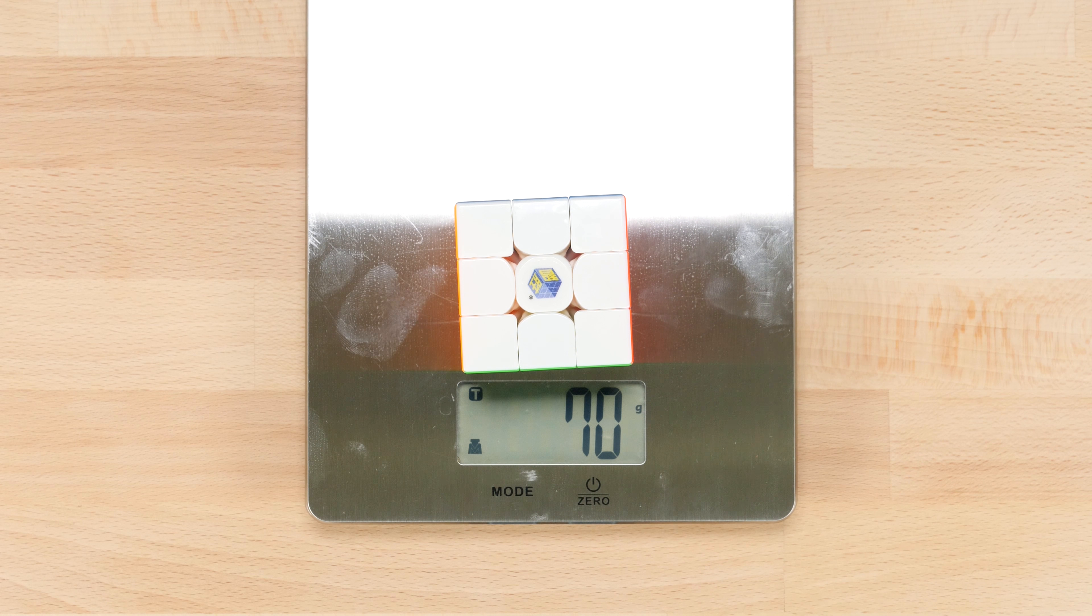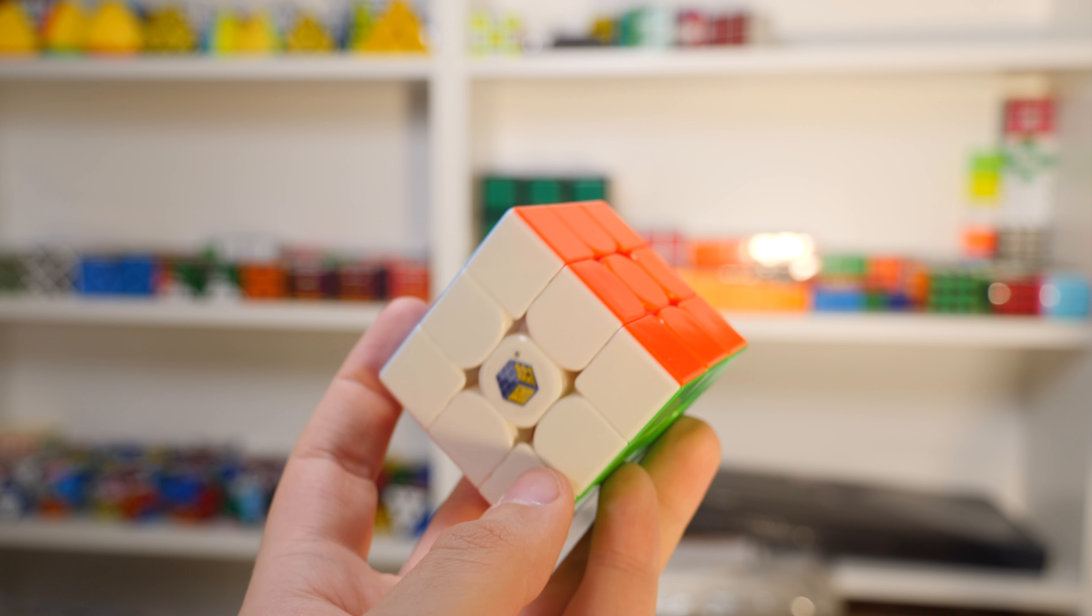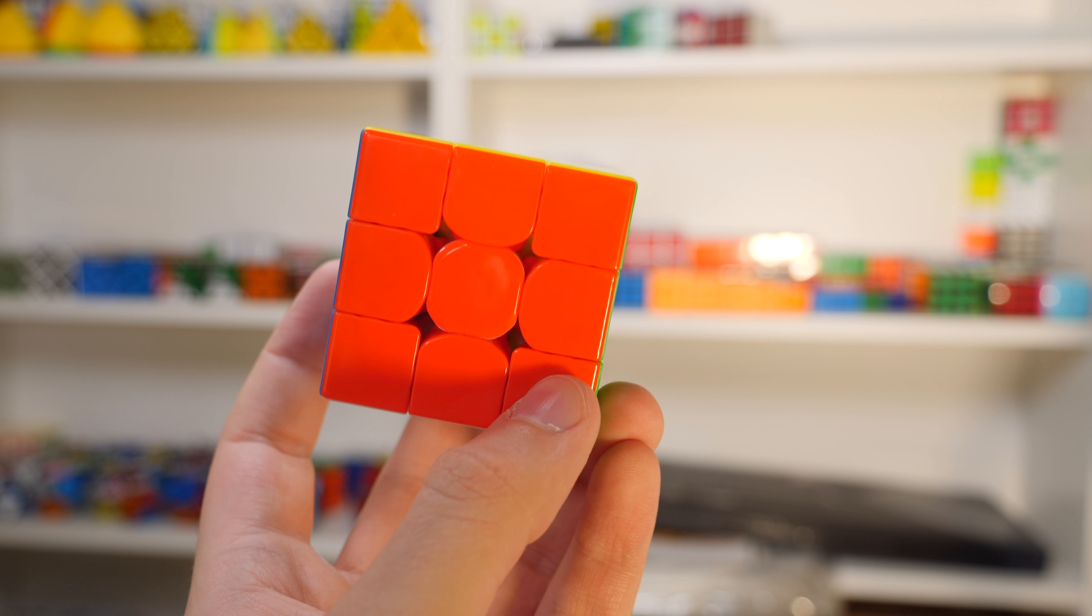So the base Huanglong weighs 70 grams with the magnetic one being 76 grams. That makes these cubes some of the lightest on the market, even more than the Gann Air line which is pretty impressive. But some people, myself included, might not be a very big fan of this. I tend to prefer heavier cubes myself and it's not that the Huanglong feels flimsy but it just doesn't have that heft that I prefer in my cubes. That's definitely a preference thing though and I have gotten used to it over time.